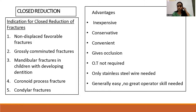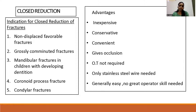The coronoid process, which does not come into occlusion, can be taken up for closed reduction. Condylar fractures, wherein the surgical correction is more complicated, are mostly treated with closed reduction.